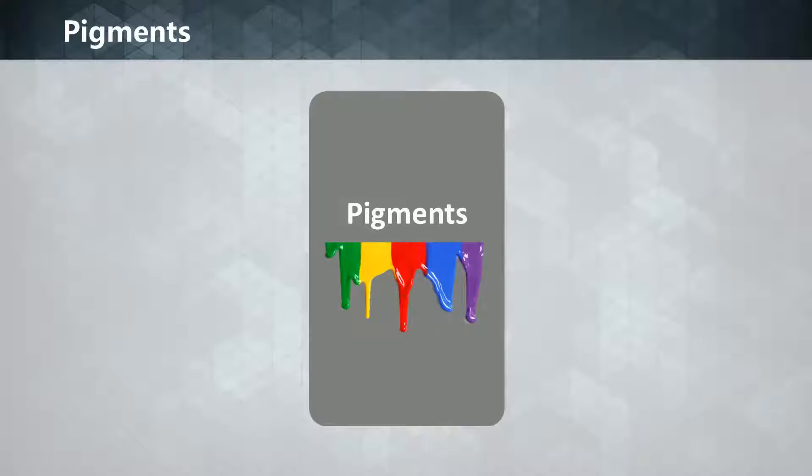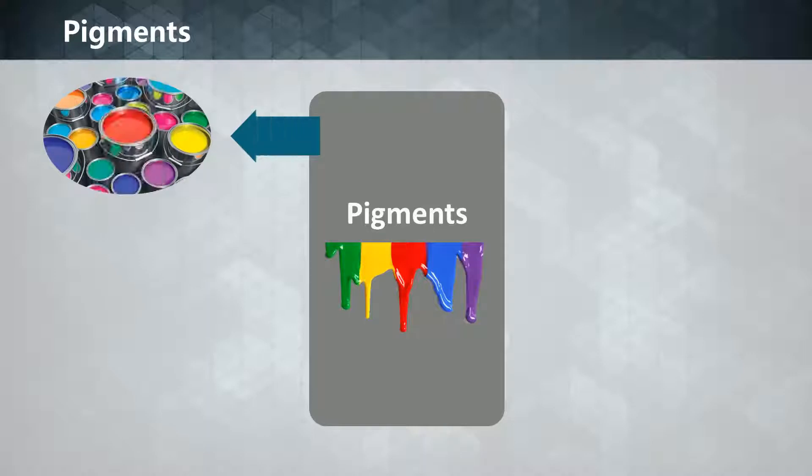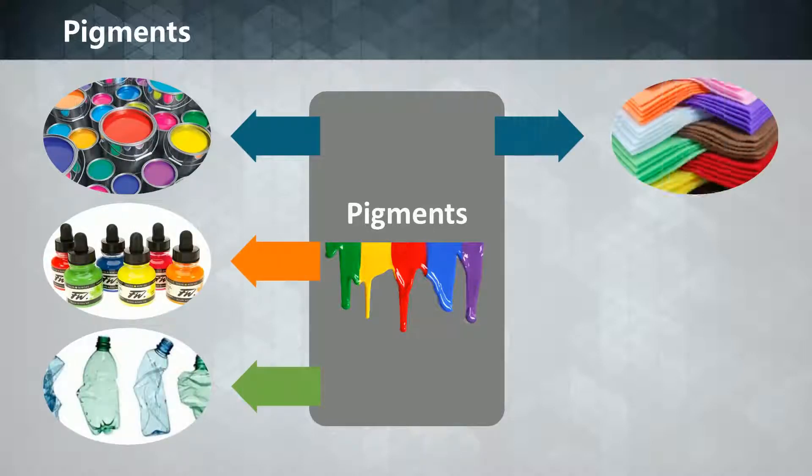A pigment is a material that changes the color of reflected or transmitted light as the result of wavelength selective absorption. Pigments are used for coloring paint, ink, plastic, fabric, cosmetics, food, and other materials.